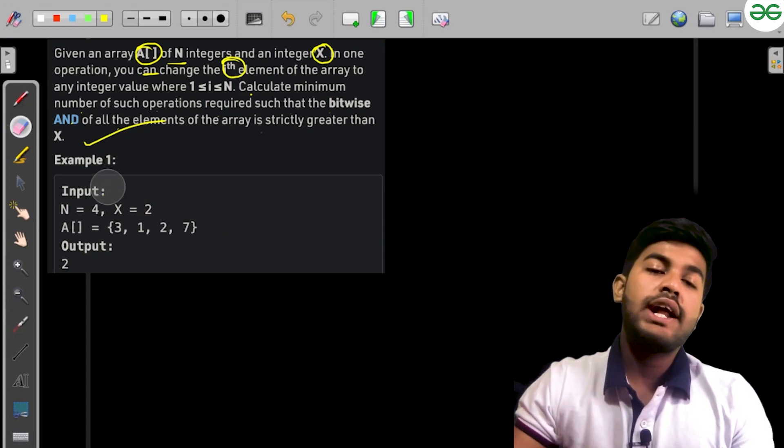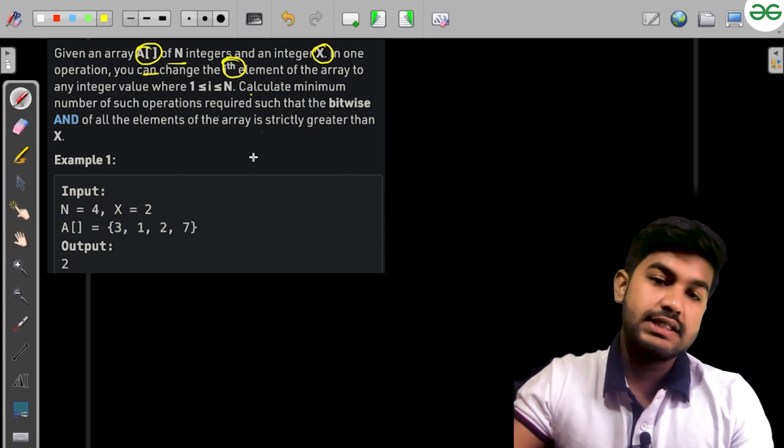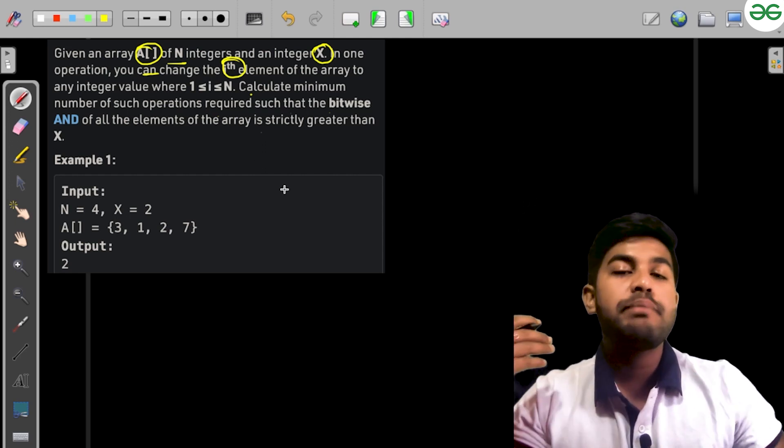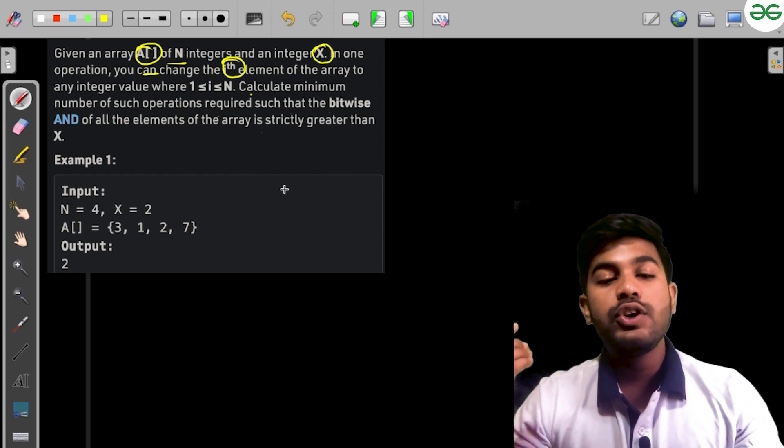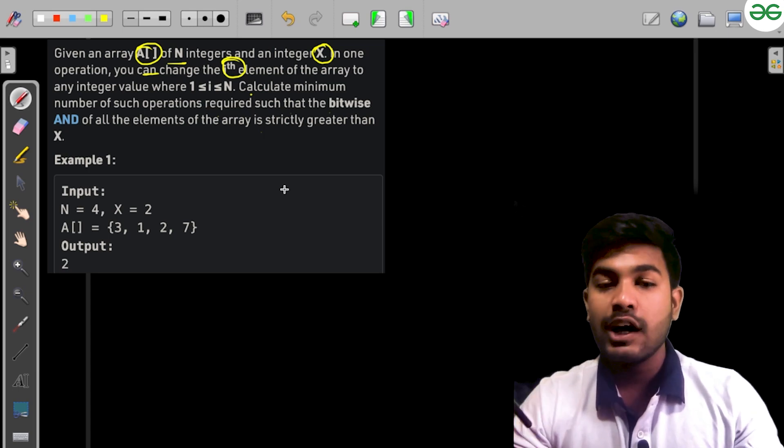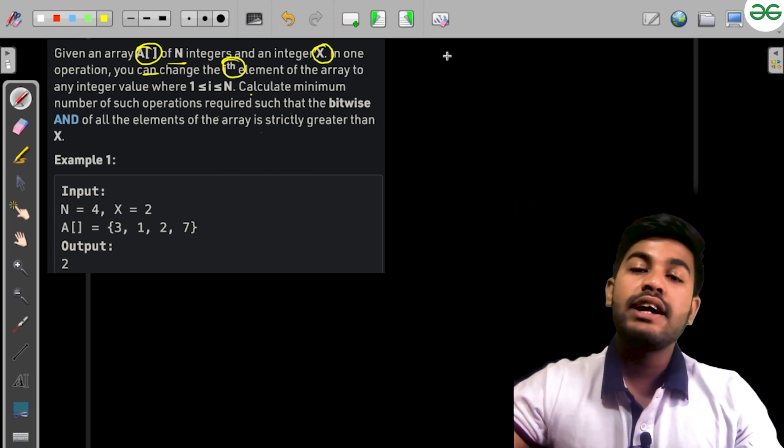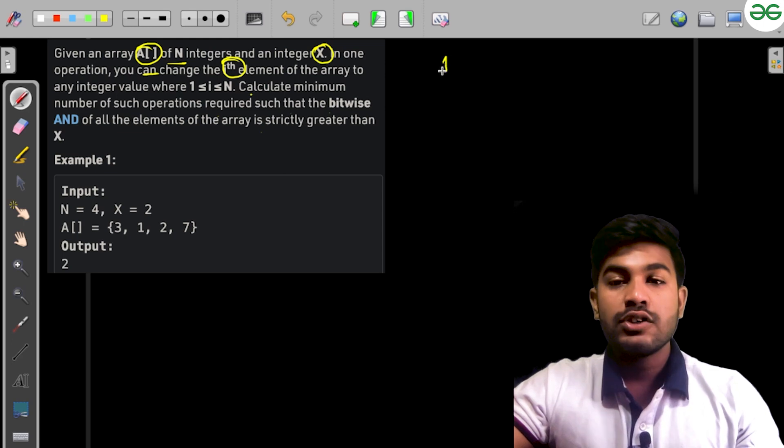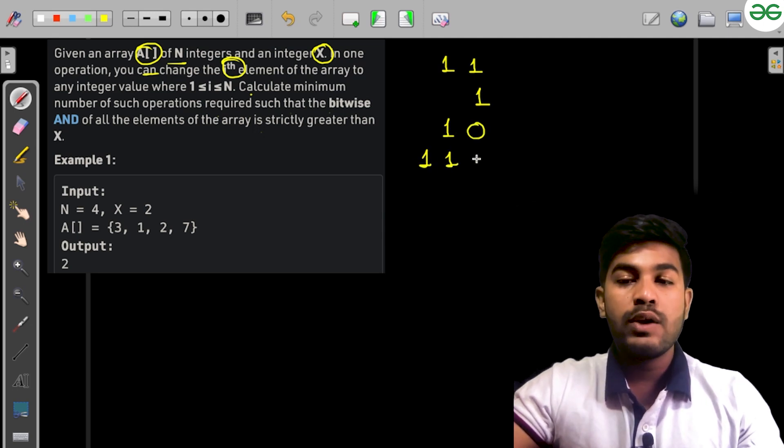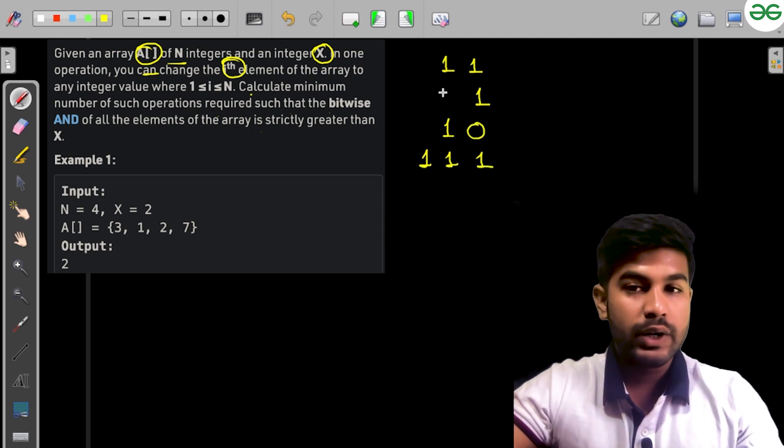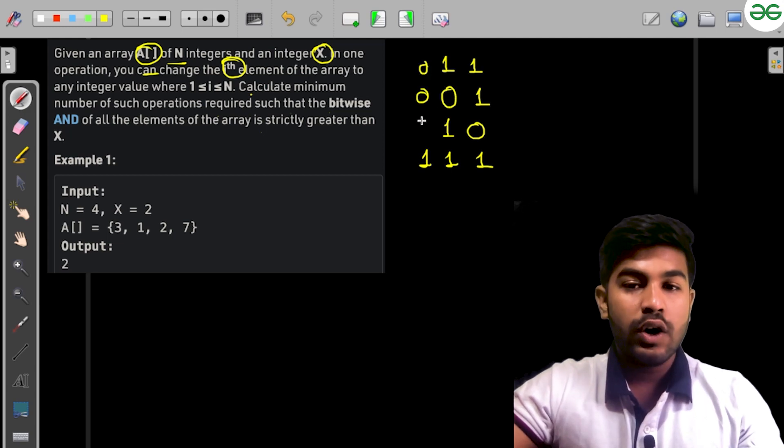We'll first visualize the sample test case, then discuss the idea. Whenever we see a bit level problem, we need to visualize it in terms of bits. Let's write in terms of bits: 3 is 11, 1 is 01, 2 is 10, 7 is 111. Let me fill zeros in all the unfilled places.